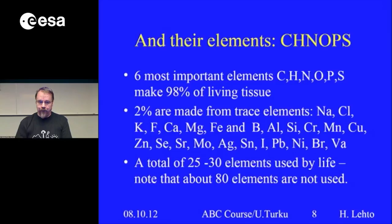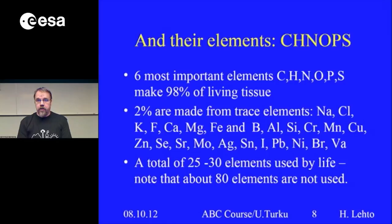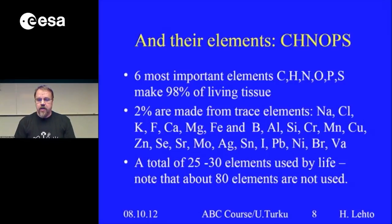Kirsi and others are going to tell how. If you look at the elements, the six most important are CHNOPS — a nice acronym, easy to remember — making up 98% of living tissue. The remaining 2% comes from trace elements: sodium, chlorine, potassium, fluoride, calcium, magnesium, iron and so on. A total of about 25–30 elements are used by life. So the number of elements needed by life is quite limited — about one third or one fourth of available elements.